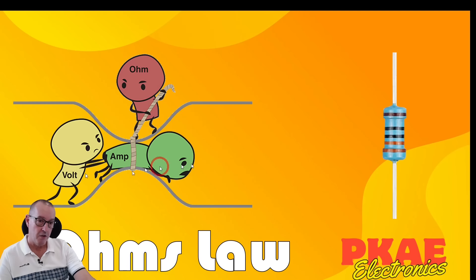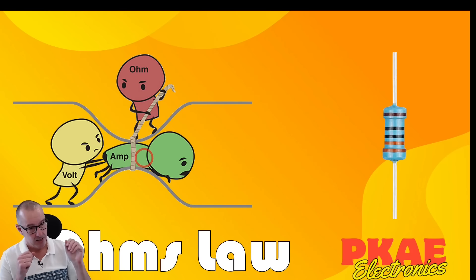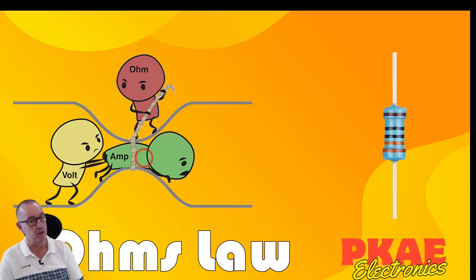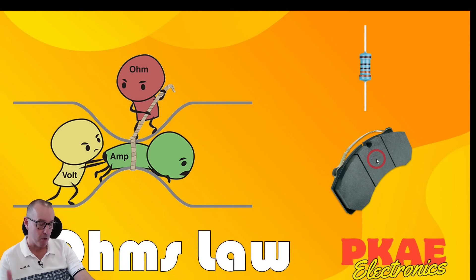You can think of resistance like friction — it impedes the flow. In a car engine, for example, we get unwanted friction, so we use oil and smooth materials to keep things running freely. But just like in our electrical circuits, friction can also be a good thing. When you want to stop that car, we need brake pads, and they impose a high level of friction to help us stop.